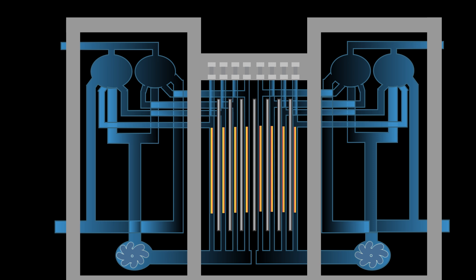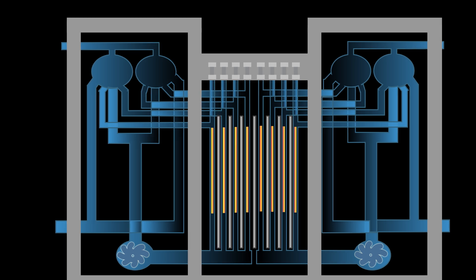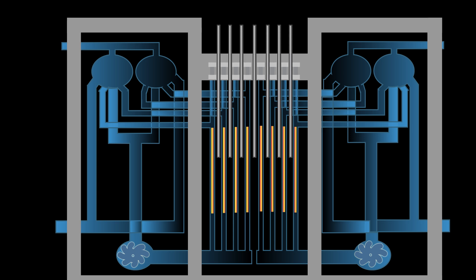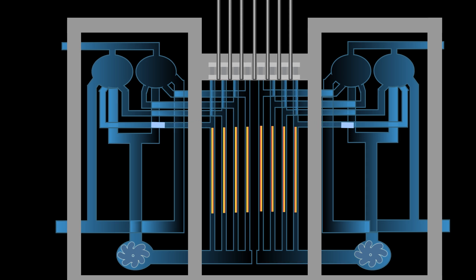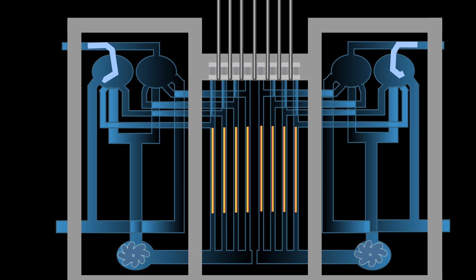The core has fuel rods enclosed in pipes called technological channels. Control rods made of boron and graphite tips are placed next to these fuel rods to control the reaction, stopping it if the rods are in place or speeding it up when they're not in place.